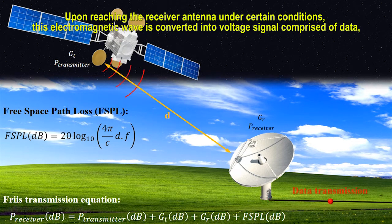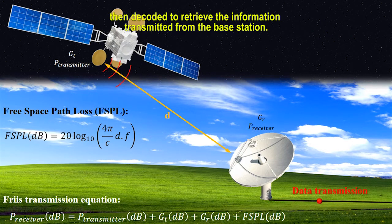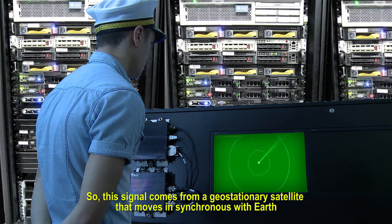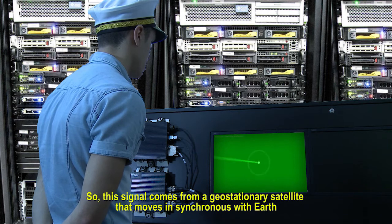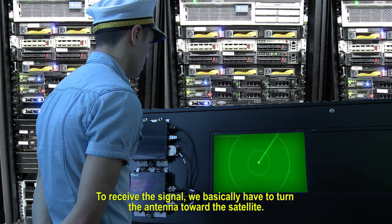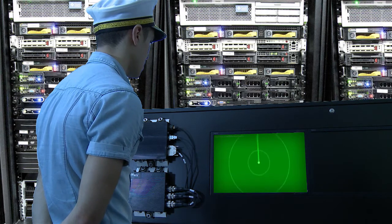After reaching the receiver antenna, under certain conditions, this electromagnetic wave is converted into a voltage signal comprised of data, then they correlate to retrieve the information transmitted from the base station. This signal comes from a geostationary satellite that moves in synchronous orbit. To receive the signal, we basically have to turn the antenna toward the satellite.